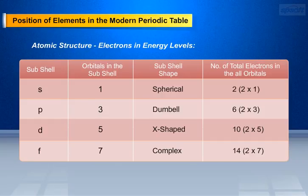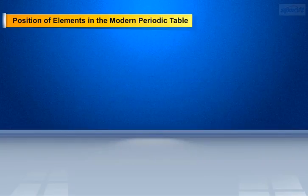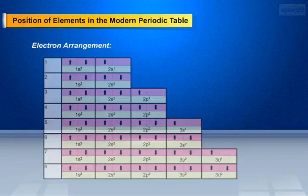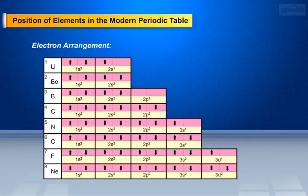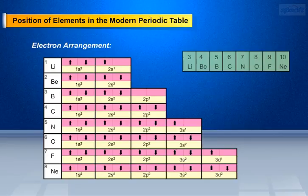Let us discuss how the shells are filled to get balance. The electron arrangement in S, P, D, and F orbitals for lithium, beryllium, boron, carbon, nitrogen, oxygen, fluorine, and neon is shown in the left side image. The right image shows elements with the total number of electrons contained by them.